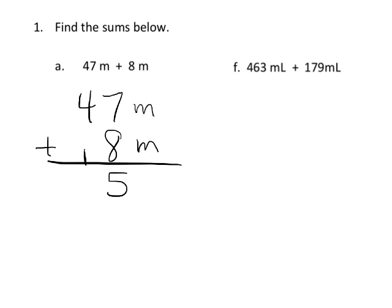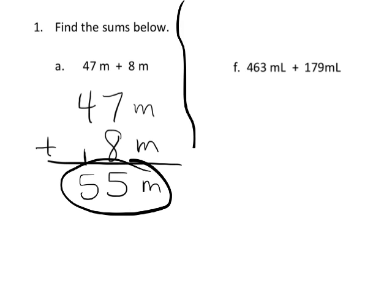This time I'm going to carry it down here. And so 4 plus 1, so 4 tens plus 1 extra ten is 50, so that makes the answer 55 meters. And let's go to the next example.